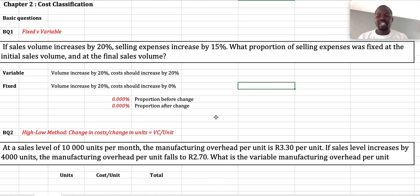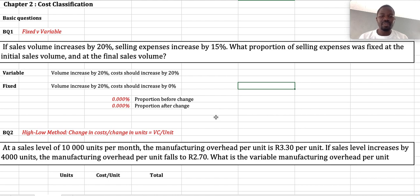In our understanding, variable costs increase in proportion to the increase or decrease in the level of activity. So in this instance, the volume has increased by 20%, and we are expecting the costs — if it's variable — to increase by 20%. But in this instance, the costs only increased by 15%. Therefore, this is not a variable cost.